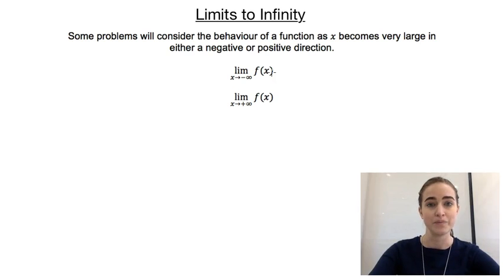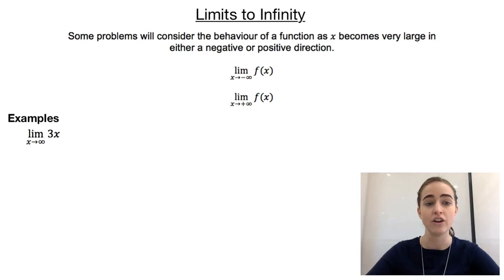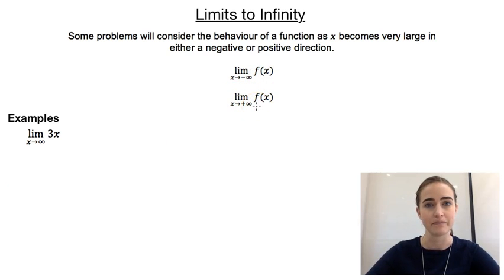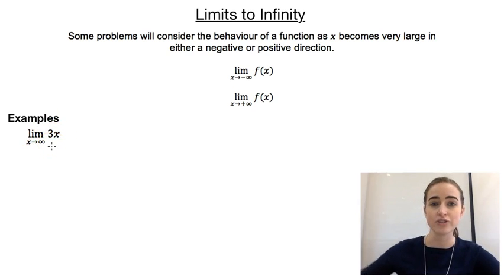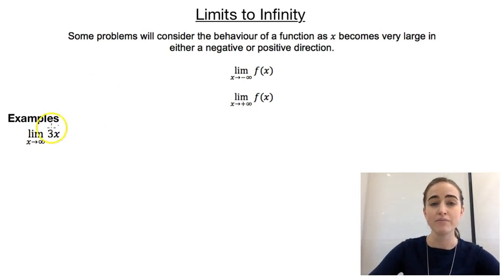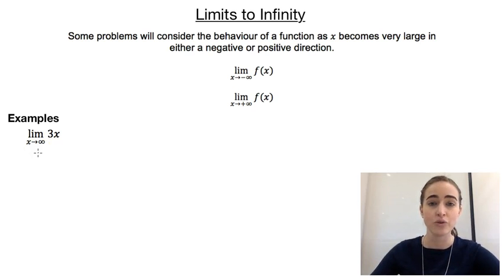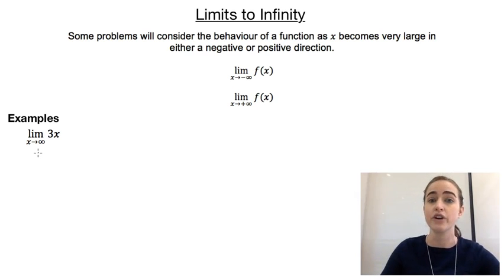So let's have a look at an example. Our first example asks us to find the limit as x approaches infinity of 3x. If it doesn't have a plus or a minus there, then we're just assuming it's positive infinity. So if we've got this function 3 times x, as x gets bigger and bigger and bigger, moving up towards infinity, then that 3 times x is going to get larger and larger and larger as well. And there's no bound to that — it's just going to keep getting bigger and bigger forever.